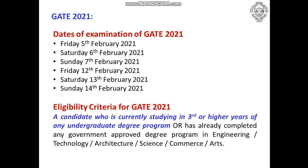The eligibility criteria has been modified for GATE 2021: a candidate who is currently studying in the 3rd year or higher of any undergraduate degree, or has already completed the degree from a government-approved college or institute in engineering, technology, architecture, science, or commerce and arts can apply for this examination. That means 3rd year students can also apply for GATE from 2021 onwards.